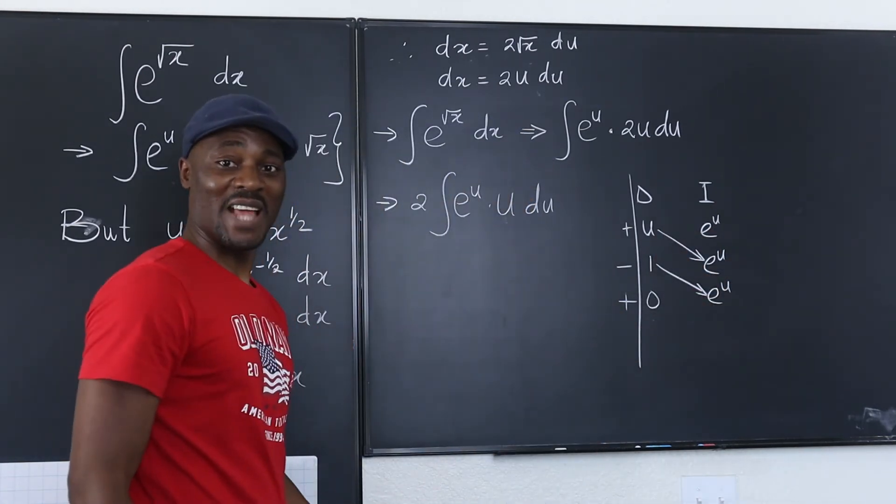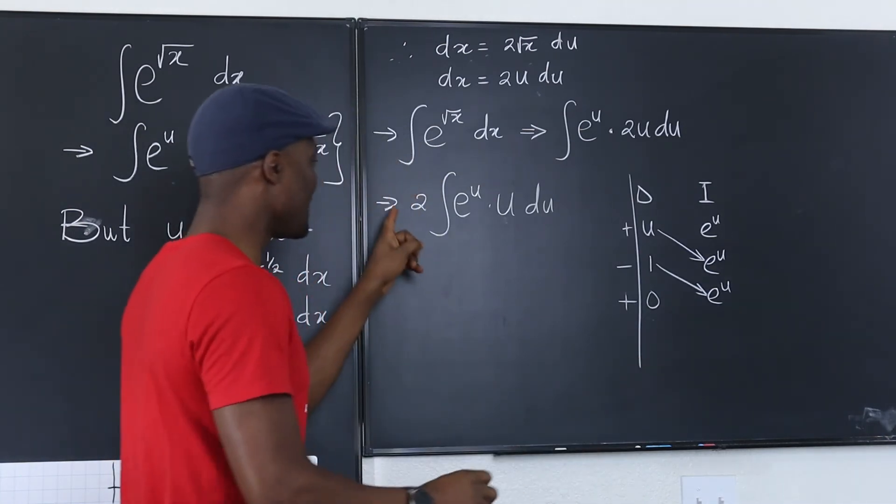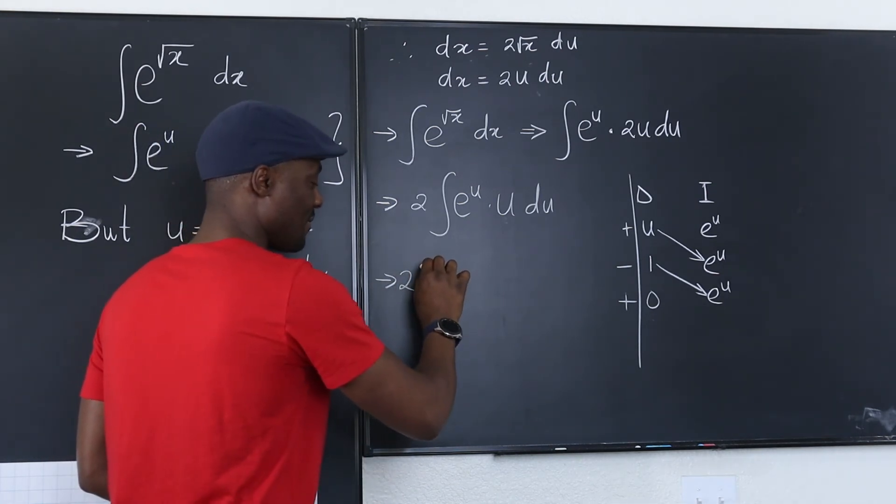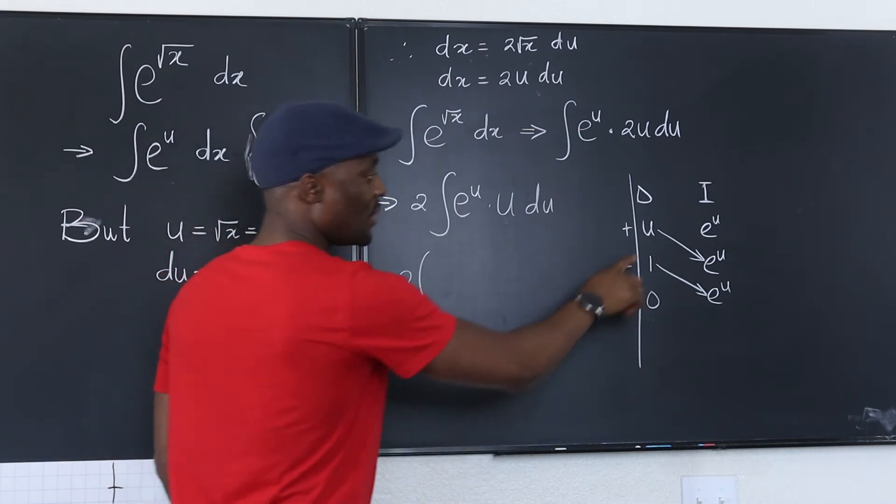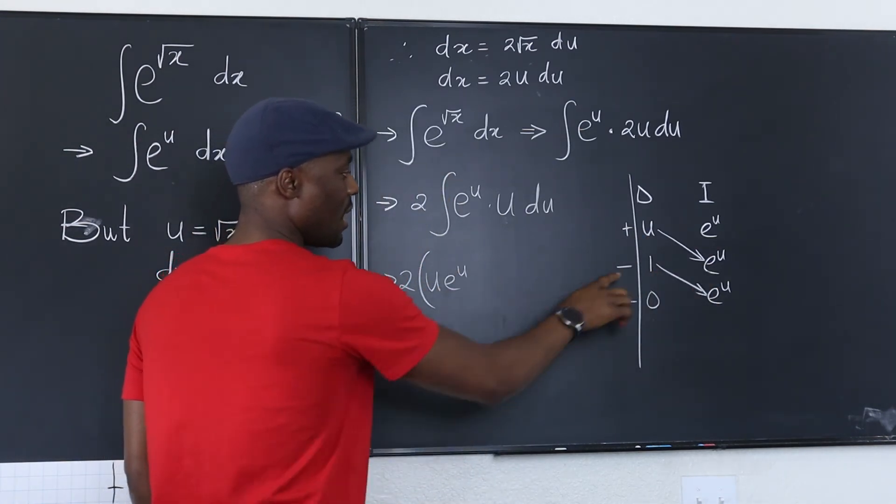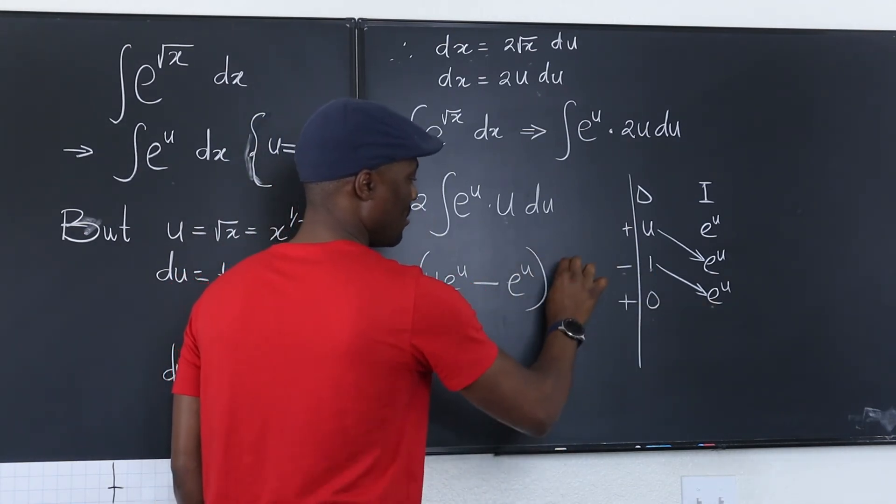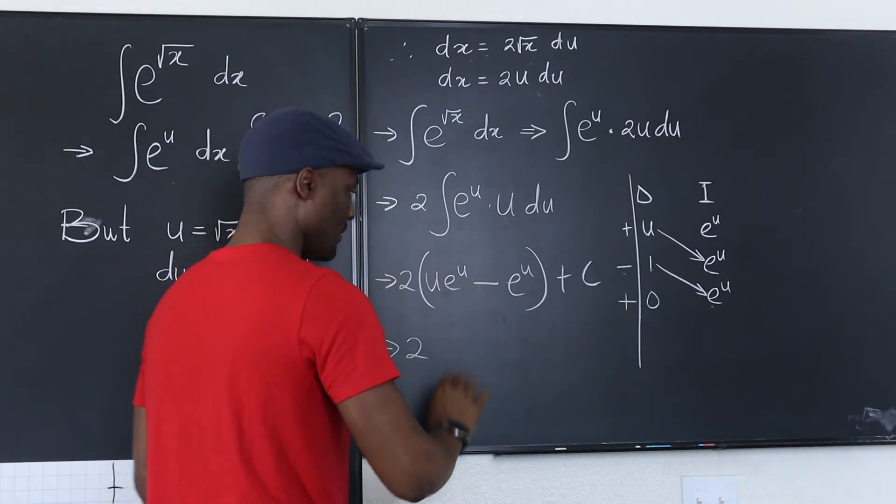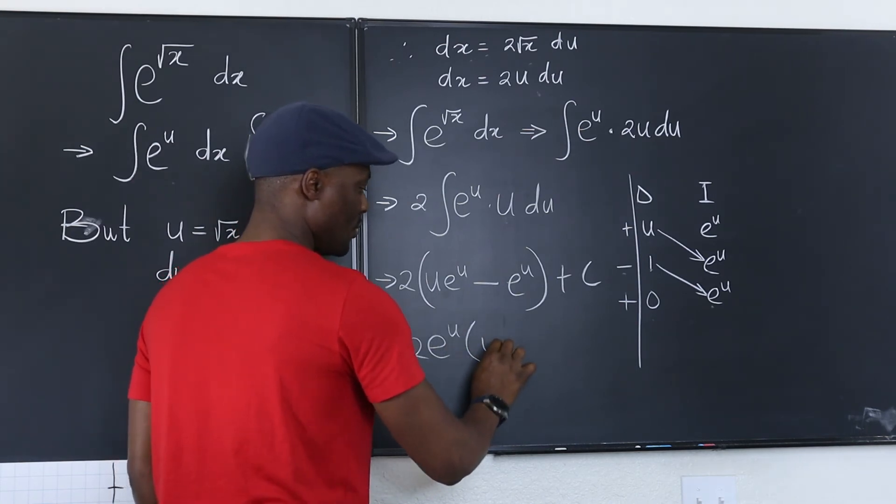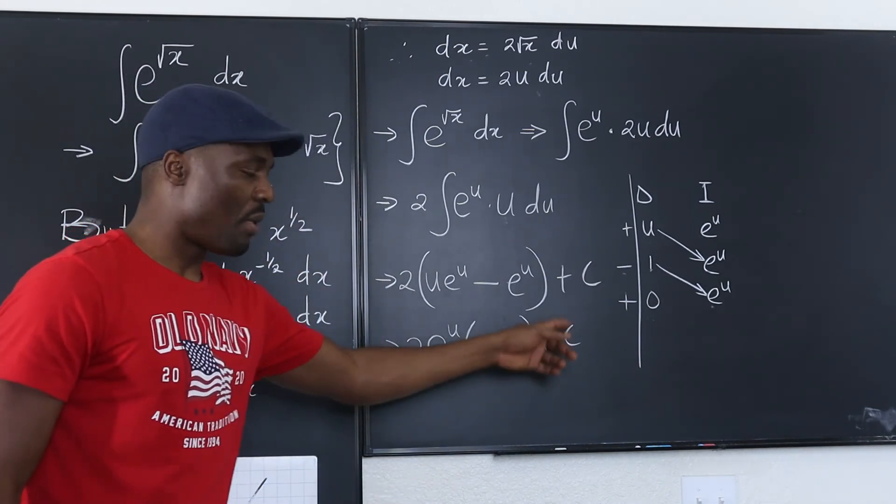And that's basically your answer. When you get a zero, you're done with your work. So now let's write our answer. This answer is now going to be two multiplied by ue to the u minus one times e to the u. That's just e to the u plus c, which leads us to two. Let's take out e to the u, and then we have u minus one plus c. I would box this.